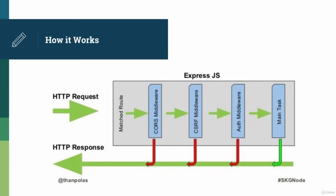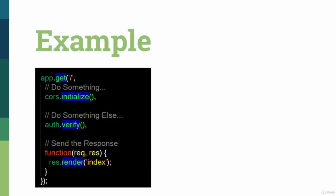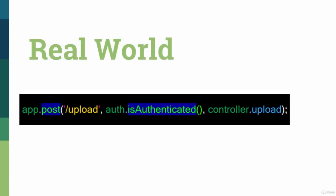In this example, before sending someone to the route they request, we would deal with any CORS or CSRF issues that may arise, and check to see if the user was authorized for that route. If it is all good, then we would send them to where they want to go. Now let's take a look at a more real-world example. Here I've defined a route located at backslash upload. I only want authorized users to be able to navigate to this route, so I've added an auth.isAuthenticated method as a piece of middleware.